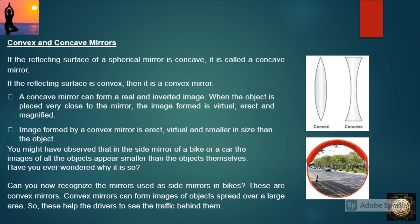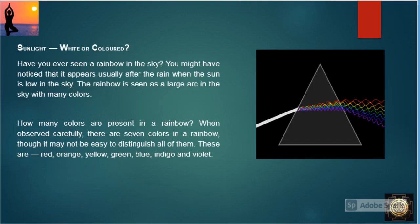Convex mirrors can form images of objects spread over a large area, so they help drivers to see the traffic behind them. Sunlight — is it white or colored? Let us find out. Have you ever seen a rainbow in the sky? It is very beautiful. You might have noticed that it appears usually after rain when the sun is low in the sky. The rainbow is seen as a large arc in the sky with many colors.